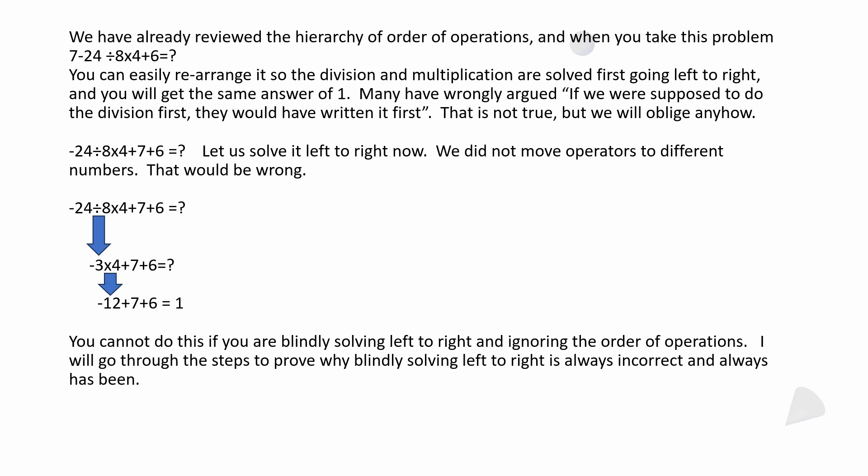We already reviewed the hierarchy of the order of operations. When you take the problem, you can easily rearrange it so that the division and multiplication are solved first, going left to right, and you'll still get the same answer of one. Many people will argue things like, if the division was supposed to be done first, they would have written it first. Or if the multiplication was supposed to be first, they would have written it first. The truth of the matter is, you can move them to the front and you're going to get the same answer as you do through the order of operations. In this case, you could make it look like negative 24 divided by 8 times 4 plus 7 plus 6.